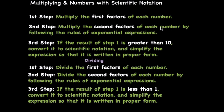For multiplying, the first step is to multiply the first factors of each number. Then we're going to multiply the second factors. After that, we focus on step three and see if the result of step one is greater than 10, and if so, convert it into proper form. The same holds true for dividing.